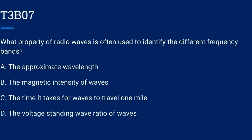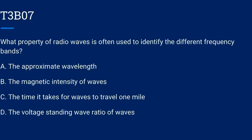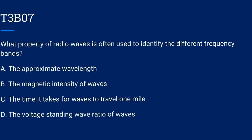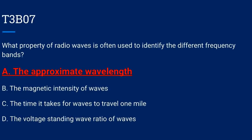T3B07. What property of radio waves is often used to identify the different frequency bands? A. The approximate wavelength. B. The magnetic intensity of waves. C. The time it takes for waves to travel one mile. Or D. The voltage standing wave ratio of waves. The correct answer is A: the approximate wavelength.